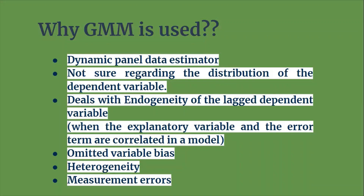If you want to estimate the parameters of panel data, you can use GMM. The second reason is, if you are not sure regarding the distribution of the dependent variable, then you can also use GMM. Third, employing a GMM model controls for endogeneity of the lagged dependent variable. Endogeneity occurs when the explanatory variable and the error term are correlated in a model — in that case, GMM controls for endogeneity.